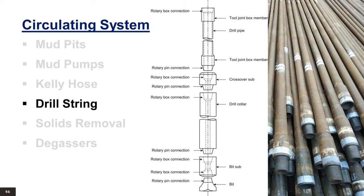Heavyweight drill pipe (HWDP) is the same as drill pipe but with a smaller inner diameter and longer tool joints. Because of its wall thickness, its weight per foot is greater than ordinary drill pipe. HWDP is inserted as a transition section between the drill pipe section above and the lower drill collar section, giving the drill string the required elasticity.